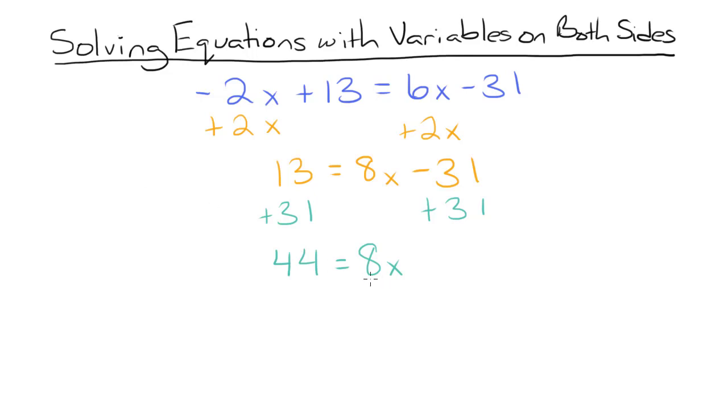And finally, to get x by itself, we divide both sides by 8. 8 divided by 8 is 1 or 1x, so we're left with x on this side. And then we can leave this as a fraction 44 over 8. Now this fraction isn't in most simplest form, so the best thing to do is to simplify it.